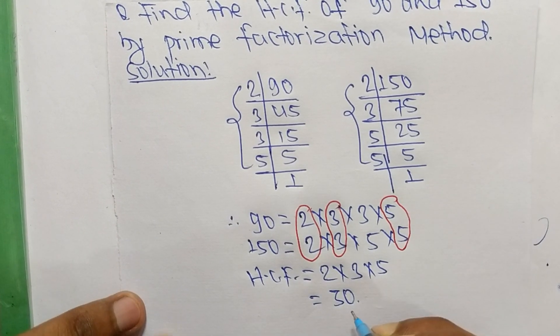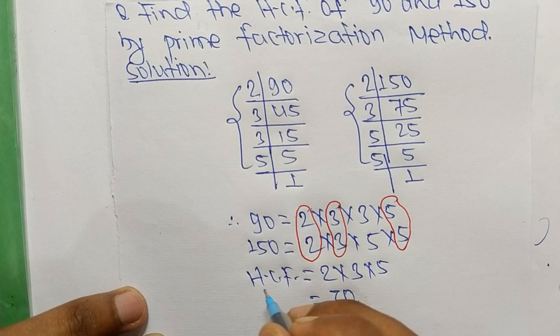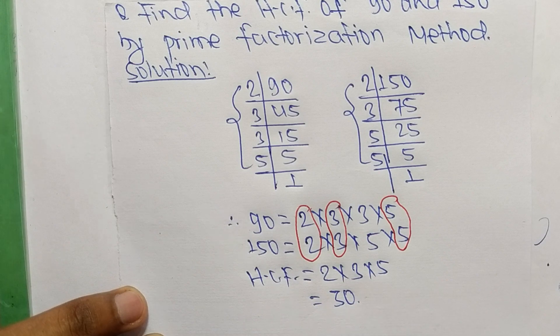So 30 is the HCF of 90 and 150. This is all for today and thanks for watching.